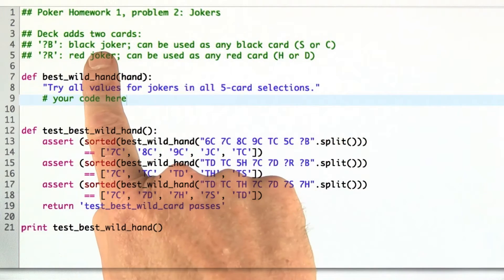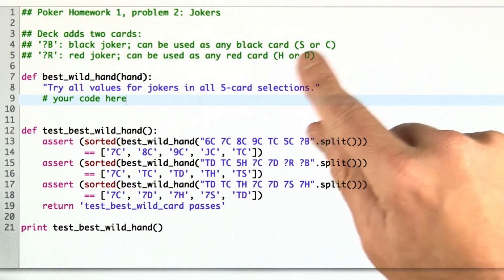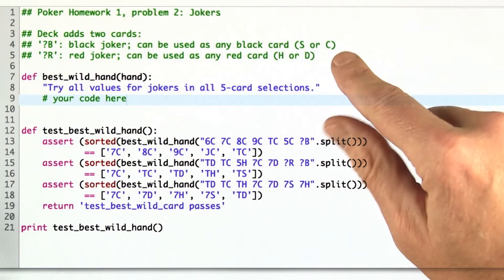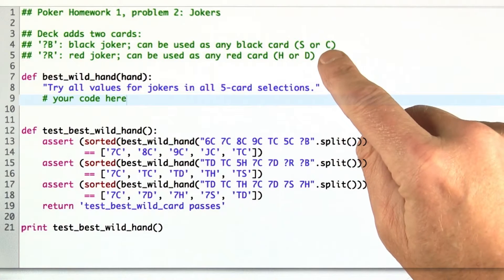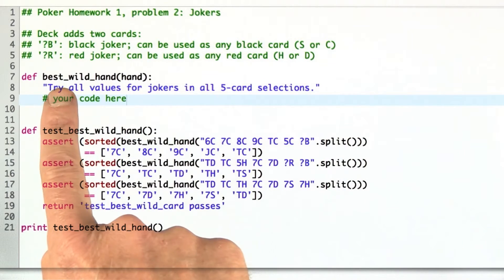If you get the black joker, you can replace it with any spade or club of any rank, and the red joker, you can replace it with any heart or diamond of any rank. What you're asked to do is write a function,